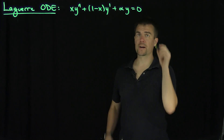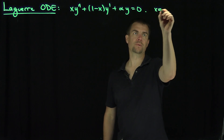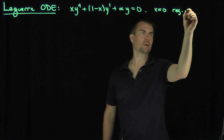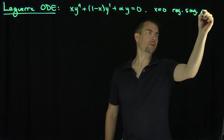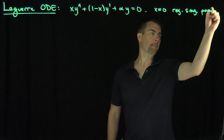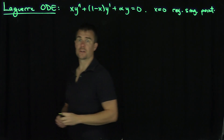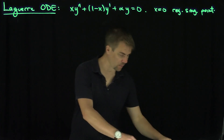For this ODE, we can see that x equals 0 is a regular singular point. And so we can write down the indicial equation for this problem.